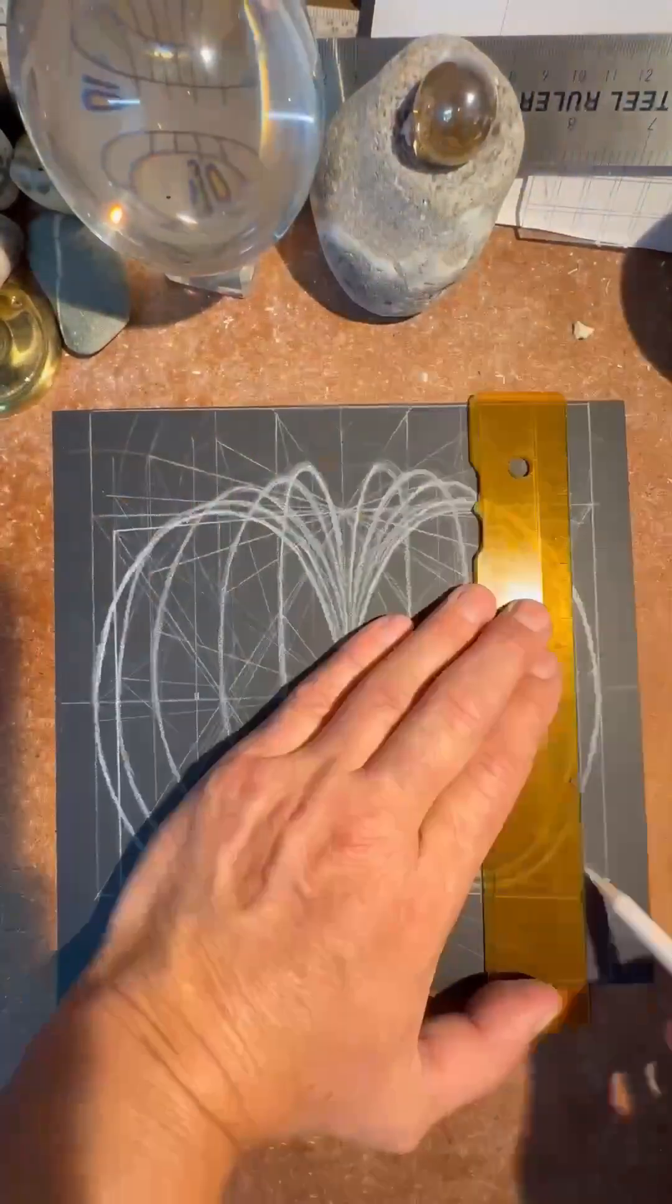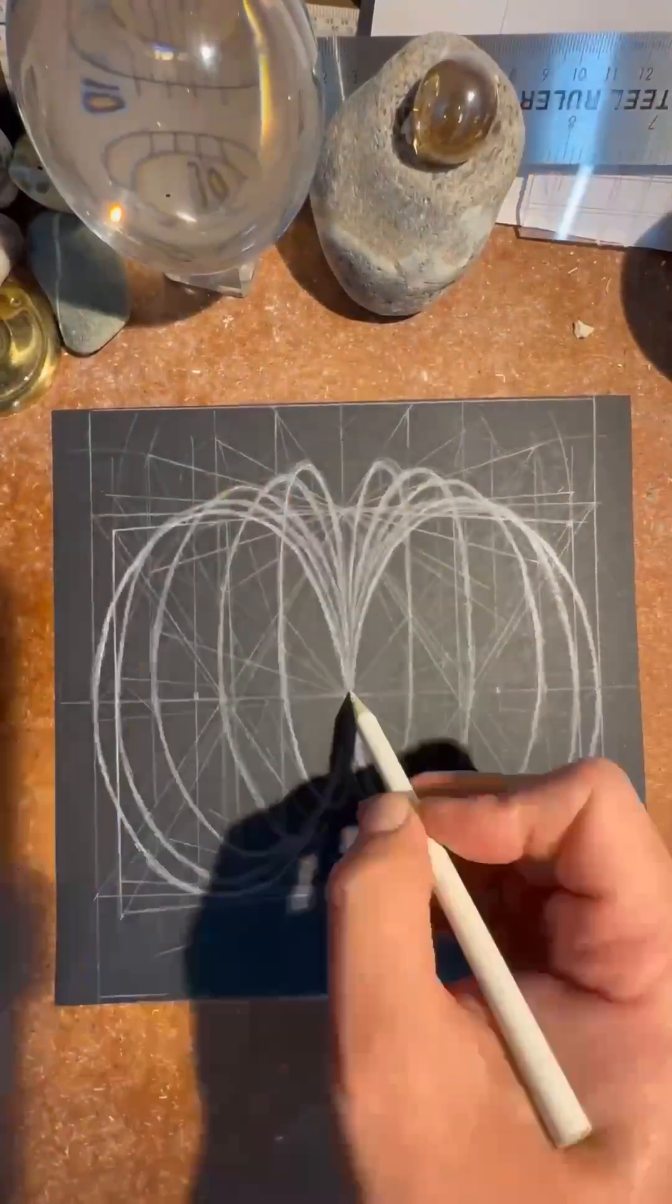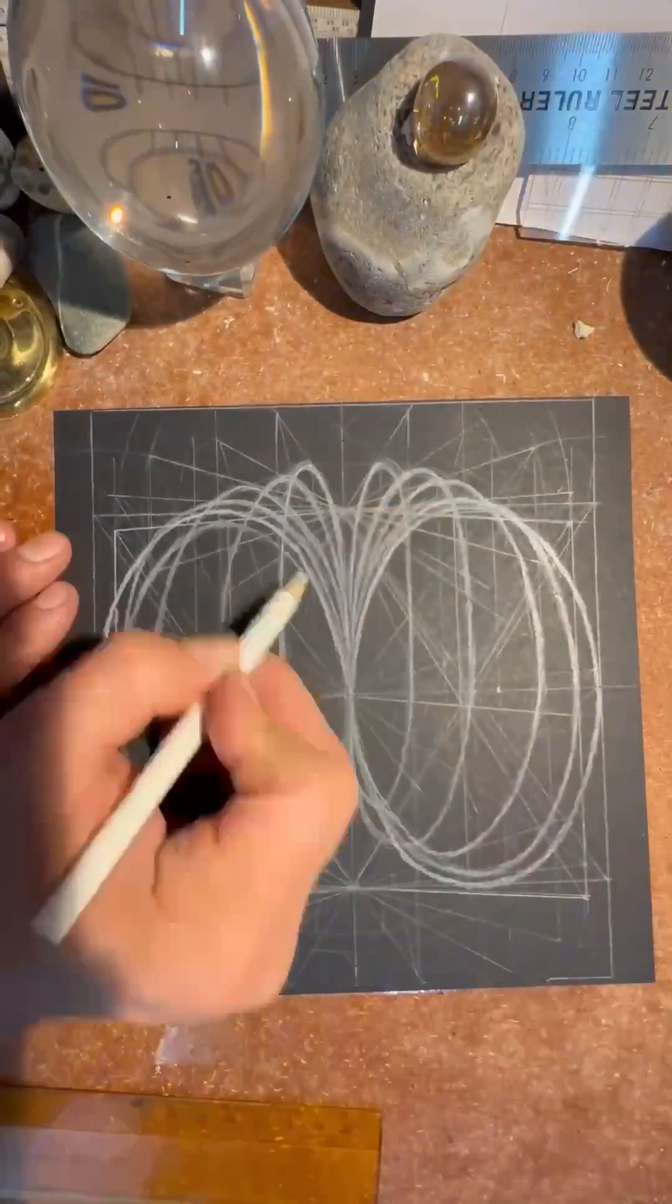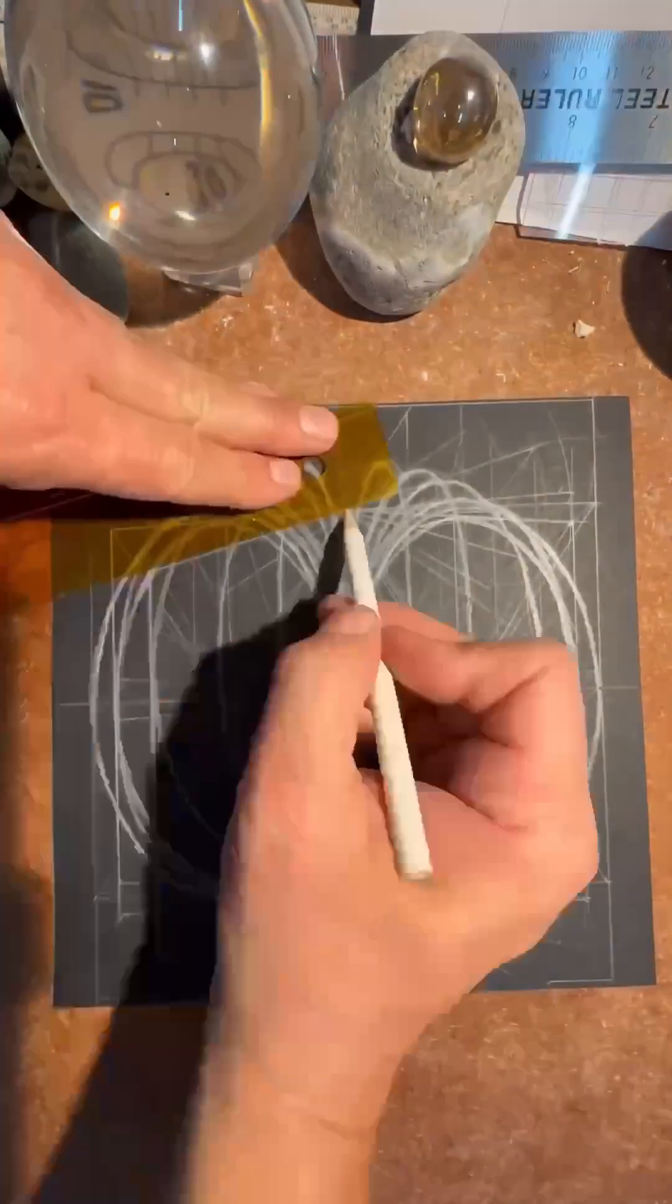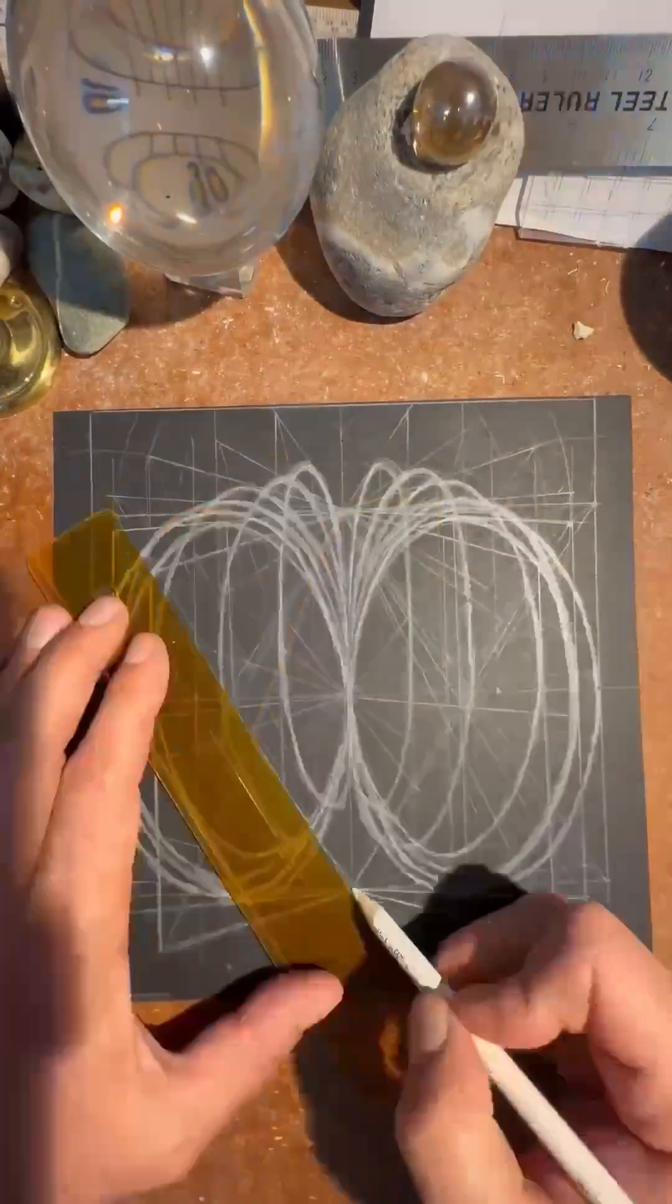Next, draw the ellipses in the front half of the sphere. Do this in the reverse way by drawing rectangles that gravitate in towards the center point.